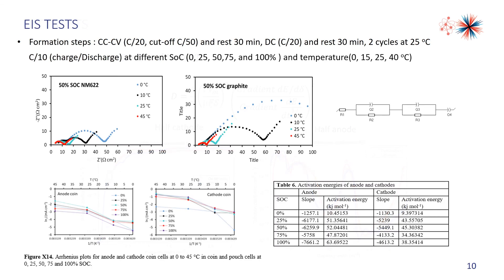The third part is the EIS test. The tests were performed at C/3 and C/10 at different SOC and different temperatures. These two figures show the EIS profile at different temperatures for the half cathode and half anode. By using the equivalent circuits in the review software, we have the RCT and the exchange current density. Then we have the Arrhenius plot, and by using the slope of this plot, we get the activation energy for the half cathode and half anode.